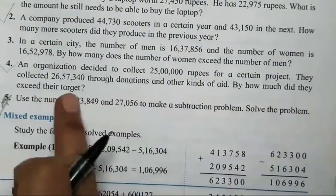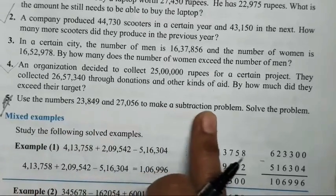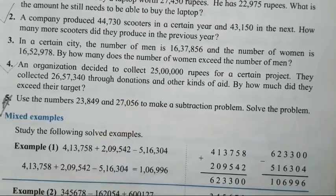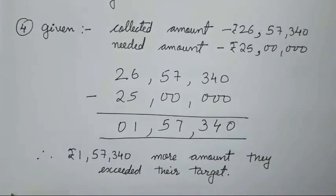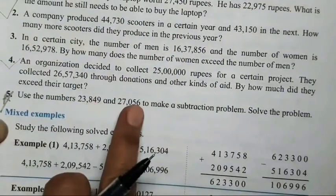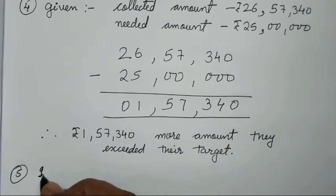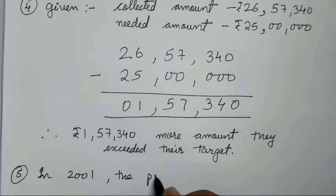The fifth question says: use the given numbers and make a subtraction problem, then solve it. You all can write any question of your choice using those numbers. I will make a problem sum to show you. Using the same numbers, I'll make a word problem about population.